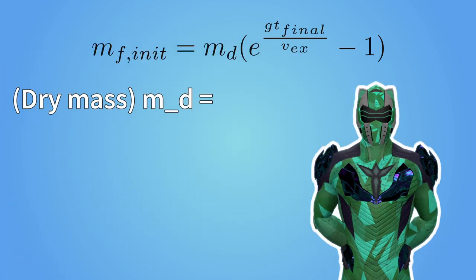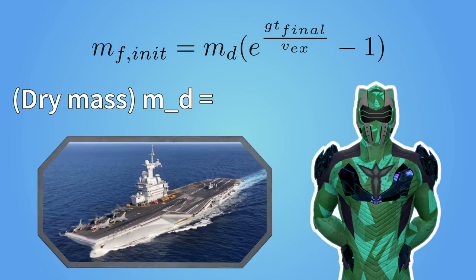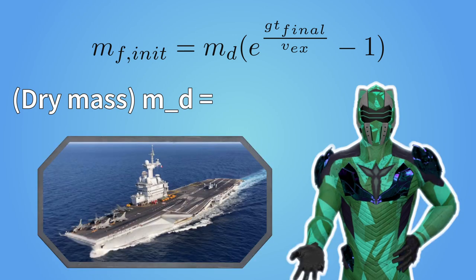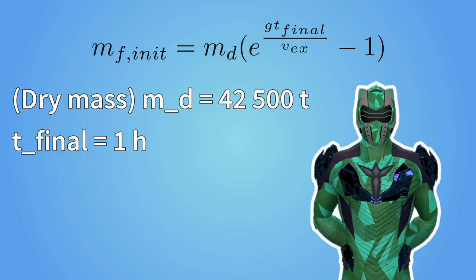So let's assume the dry mass of the Bastion equals the mass of the Charles de Gaulle, a French aircraft carrier. It's a completely random choice—whatever. That's 42,500 tons. In the game, the Bastion can hover for one hour at most. That's our target time.